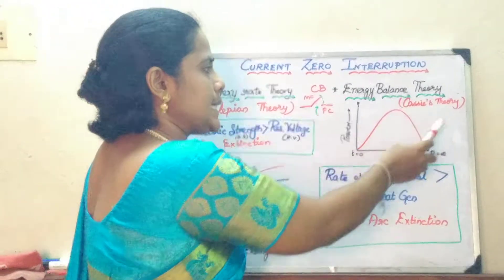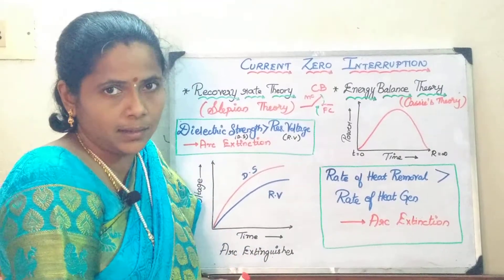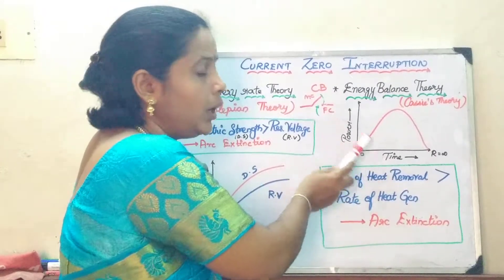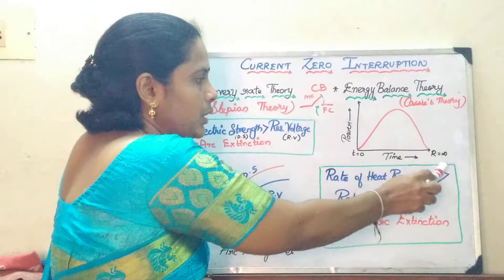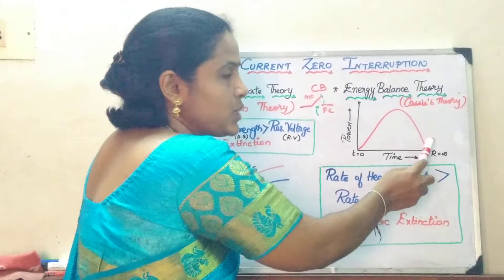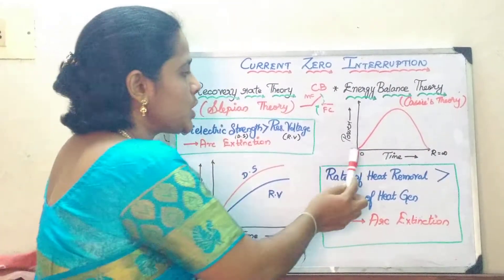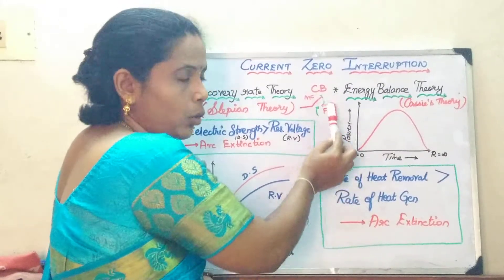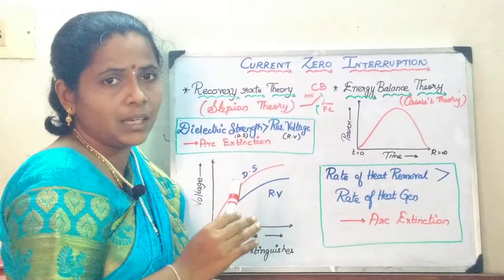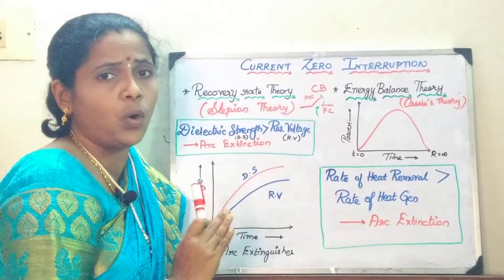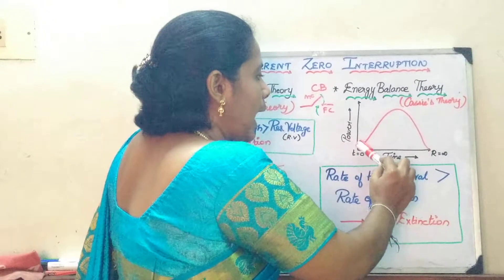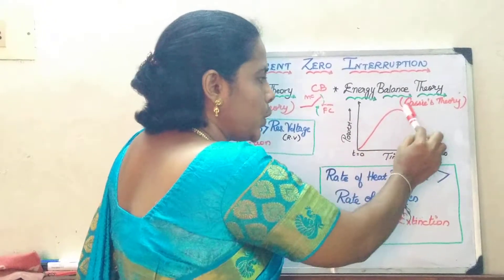Now we will move on to Cayce's theory, or the energy balance theory. This graph is plotted with respect to power versus time. It is not drawn with current versus time because the waveform gets quenched at every current zero — every half cycle you are going to quench the arc. Initially, at time T equal to zero, when the contacts are open, there will be some ionized gases, and the restriking voltage will be zero at this point. As time passes and the current and voltage increase, the power also increases, and when the current reaches zero, the power also reaches zero.